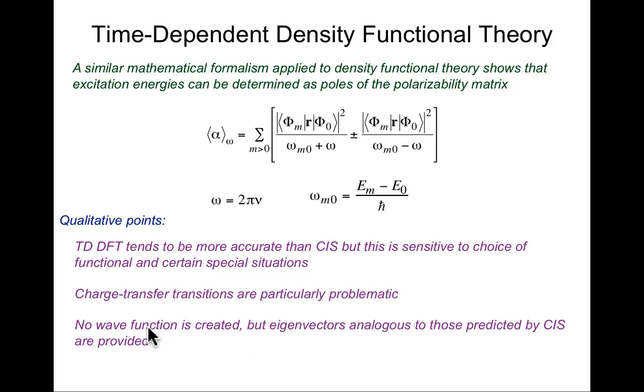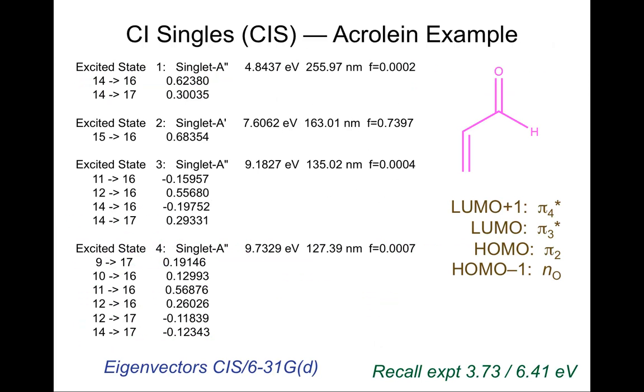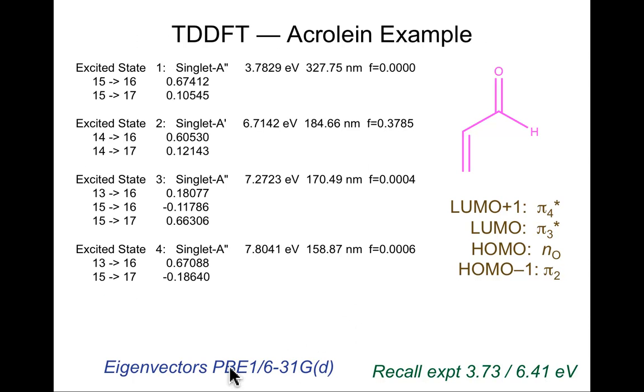In time-dependent density functional theory, unlike CIS, there is no wave function. So we cannot take expectation values of certain quantities, for instance, but we do get eigenvectors quite similar to those predicted by CIS theory. Let's actually take a look at that. Again, an example may be most helpful. So let's go back to our friend acrolein, which previously I'm showing, again, the CIS 6-31G(d) level of theory. Remember that experiment was 3.73 and 6.41, and CIS significantly overestimated the energies of the excited states by about 1.1 to 1.2 electron volts. The Hartree-Fock model actually had the non-bonding lone pair below pi_2, which is also a little surprising. So now let's look at density functional theory.